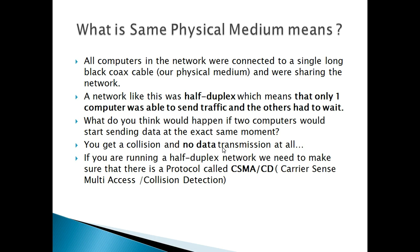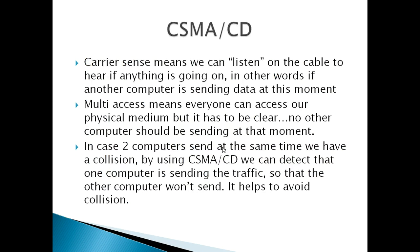If two computers try to send or receive data at the same time, it will end up in a collision and data loss — no data will be transmitted. To overcome this, Ethernet uses a special protocol called CSMA/CD, which stands for Carrier Sense Multiple Access with Collision Detection. As the name says, it listens to check whether any other device is currently transmitting. If data is being sent, it stops sending packets and waits for the process to complete before sending, helping to avoid collision and data loss.